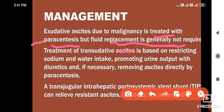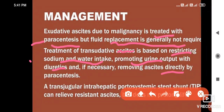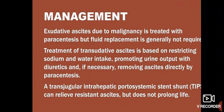For transudative ascites, treatment is based on restricting sodium and water intake and promoting urine output with diuretics. If necessary, ascites can be removed directly by paracentesis. Trans-jugular intra-hepatic portosystemic stent shunt can relieve resistant ascites, but does not prolong life.